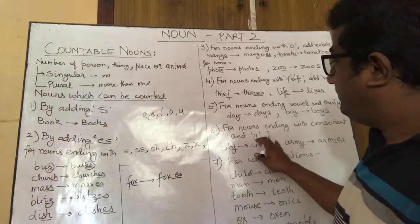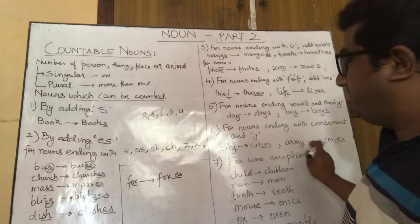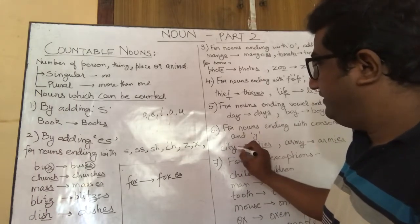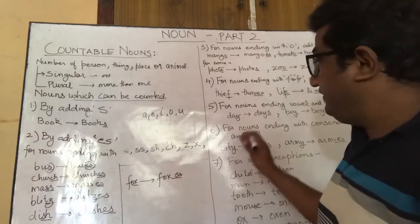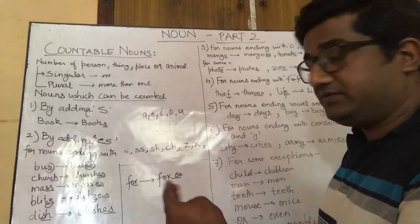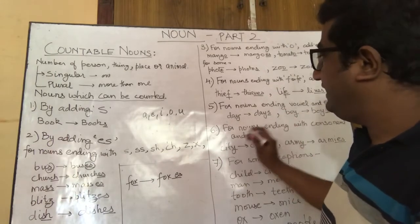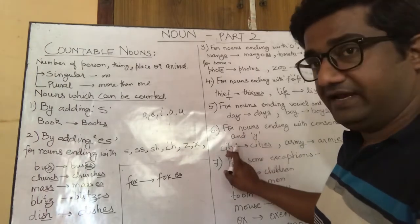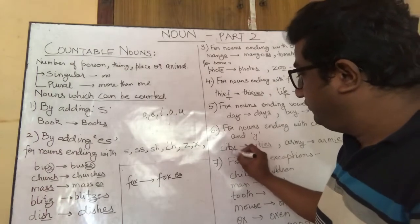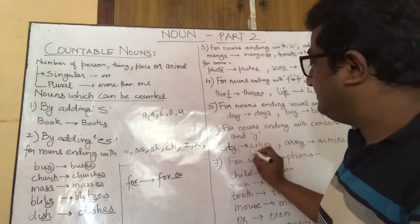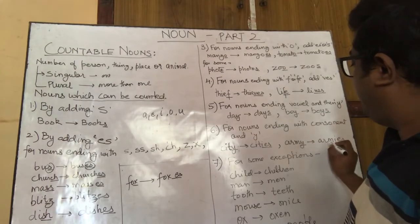When a noun ends with Y but there is a consonant before the Y, we remove Y and add I-E-S. For example, city (C-I-T-Y): T is a consonant, not a vowel, so city becomes cities (C-I-T-I-E-S). Army (A-R-M-Y) becomes armies (A-R-M-I-E-S).